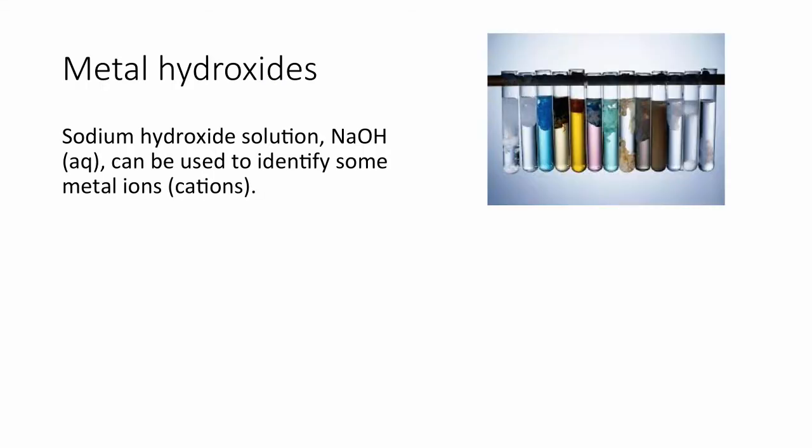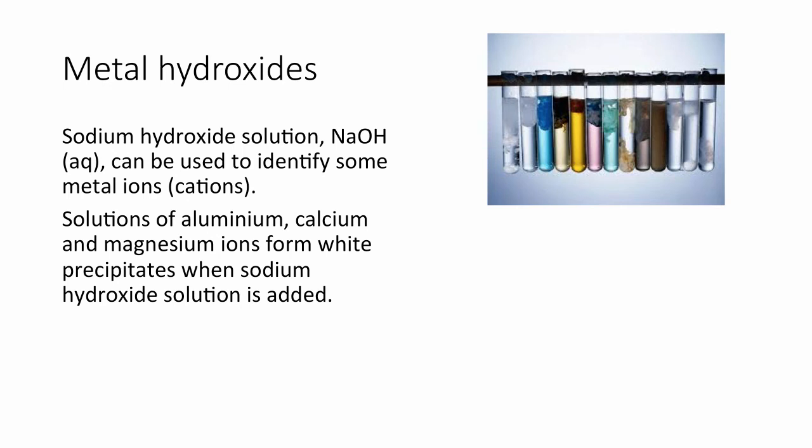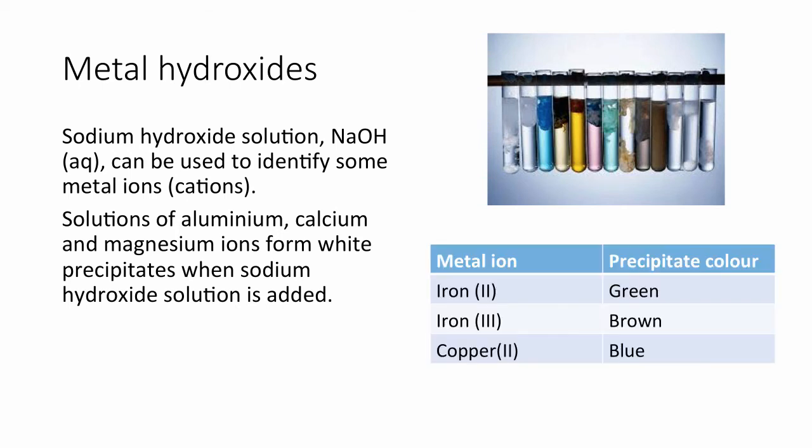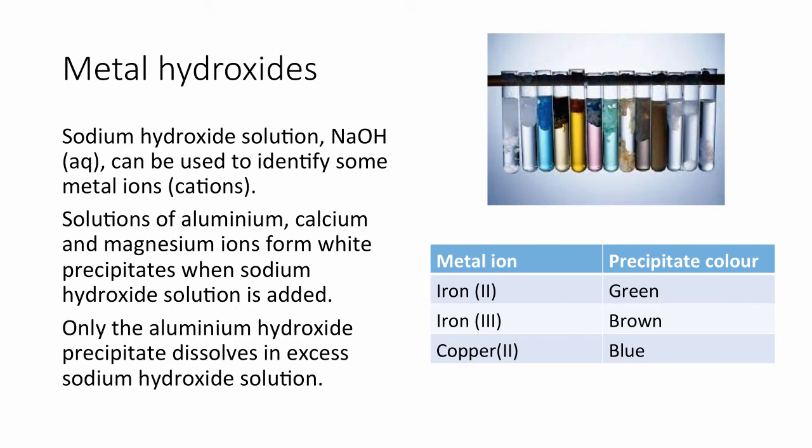Metal hydroxides. Sodium hydroxide solution can be used to identify some metal ions. Solutions of aluminium, calcium and magnesium ions form white precipitates when sodium hydroxide solution is added. Iron 2 forms a green precipitate. Iron 3 a brown precipitate. And copper 2 a blue precipitate. Only aluminium hydroxide precipitates dissolve in excess sodium hydroxide solution.